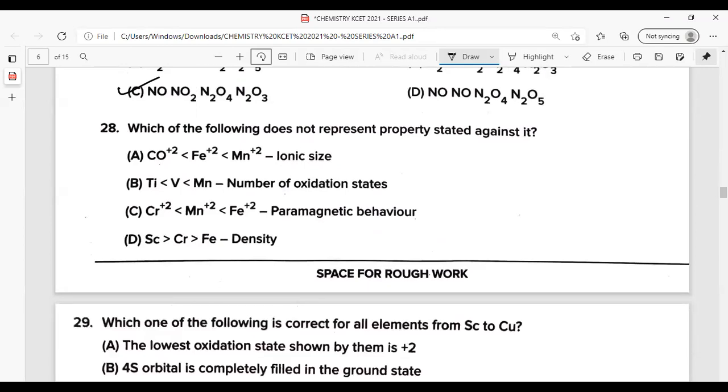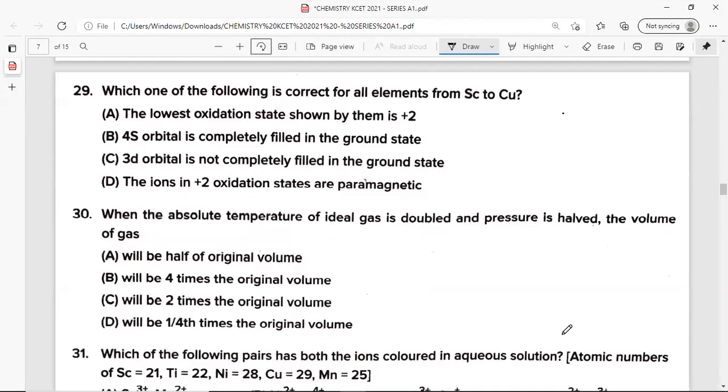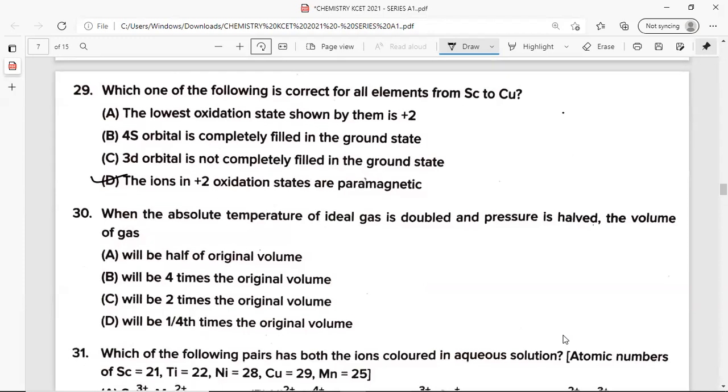Question number 28: Which of the following does not represent a property stated against it? For question number 28, it's option C, Cr2+ less than Mn2+ less than Fe2+ for paramagnetic behavior, that is increasing in paramagnetic behavior. Question 29: Which one of the following is correct for all elements from scandium to copper? For question number 29, it's option D, the ions in plus 2 oxidation states are paramagnetic.